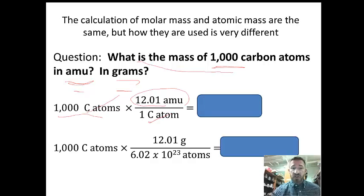Basically, you'd multiply 1,000 times 12.01 AMUs to get the mass of 1,000 carbon atoms. Calculate that and see what you get.